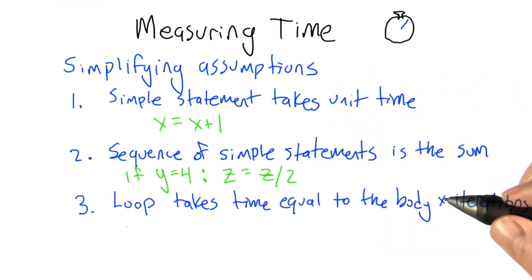It follows from these assumptions that the running time for a loop is going to be equal to the time it takes for the body of the loop to run times the number of times it's repeated, the number of iterations.